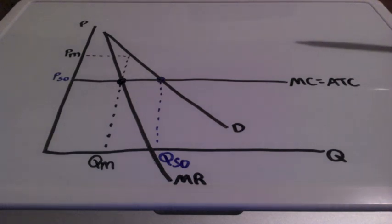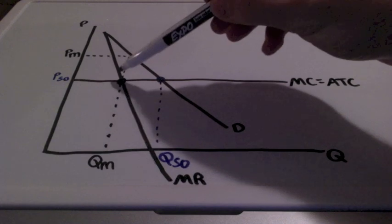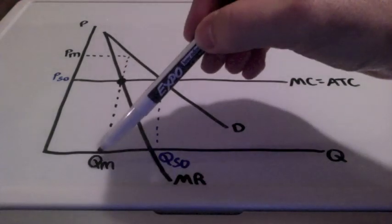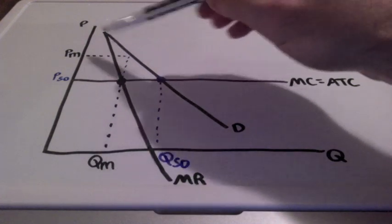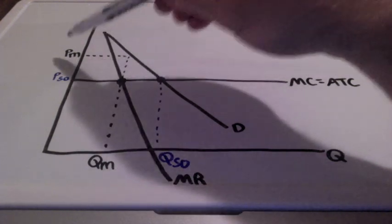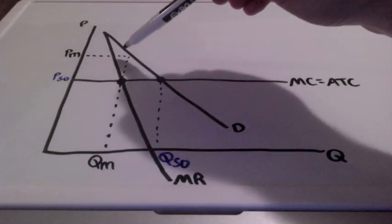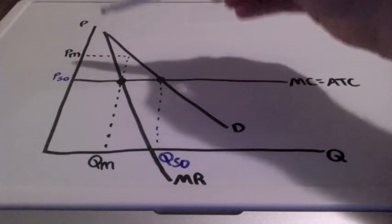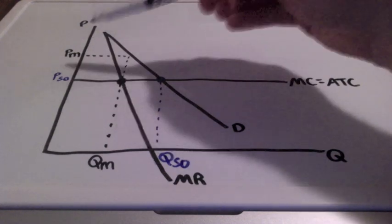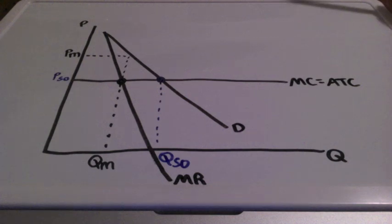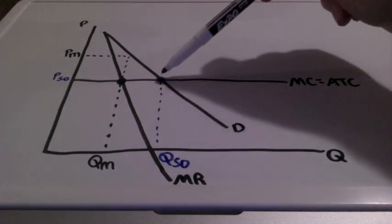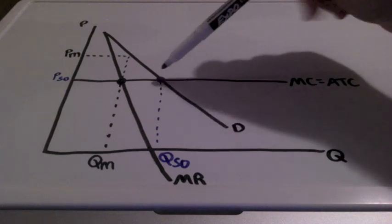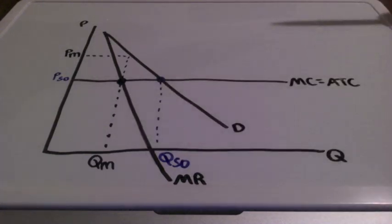Now, we find the firm's profit-maximizing quantity where marginal revenue equals marginal cost. This is the quantity the firm is going to produce. And we bring it up to the demand curve — this is the price that the firm is going to charge and place on the consumer. Where demand equals marginal cost, this is referred to as the socially optimal price and quantity.